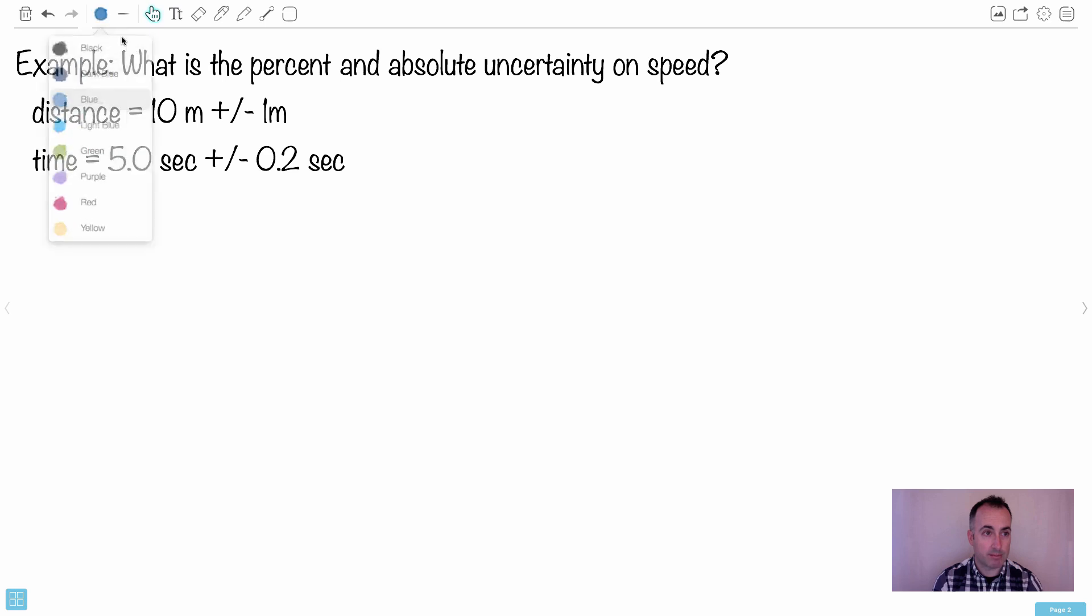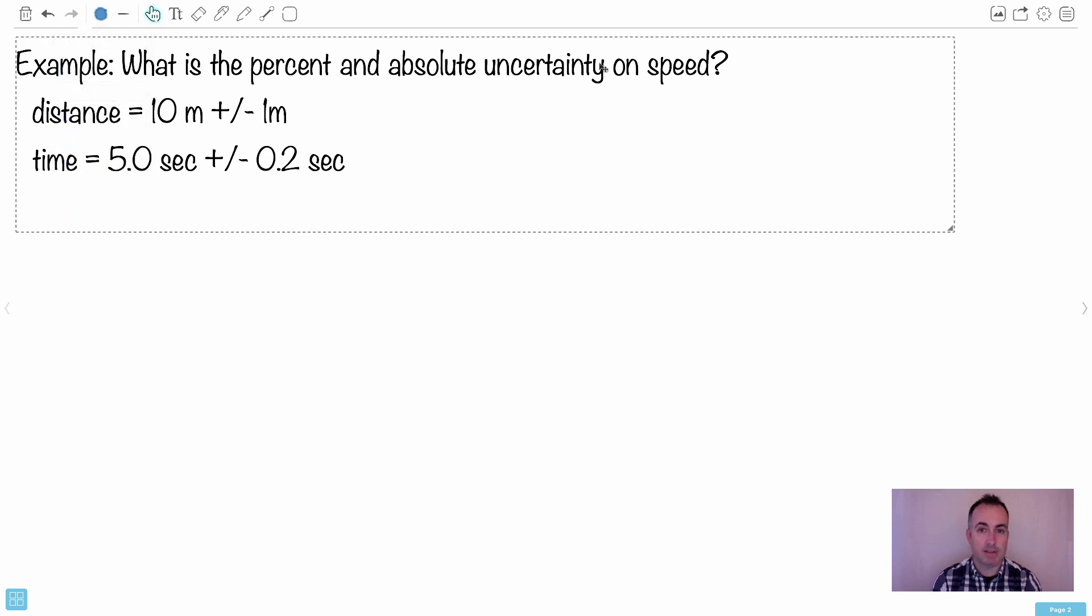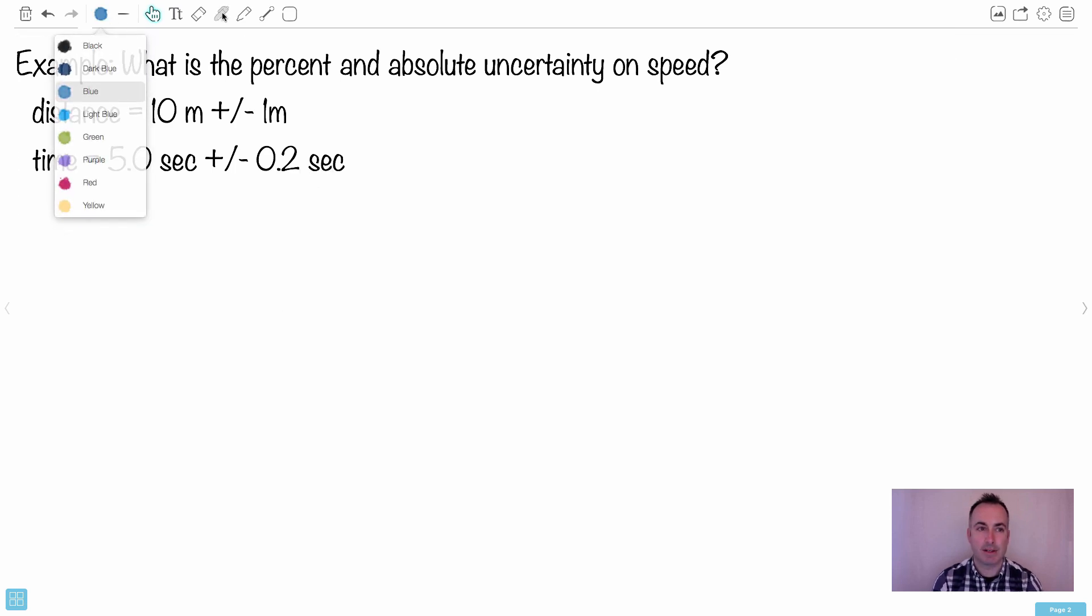So here we go. We have an actual example. What's the percent and absolute uncertainty on the speed? So here we have a distance of 10 meters plus or minus 1 meter, and we have a time of 5.0 seconds plus or minus 0.2 seconds. So to find the percent uncertainty, that might be a good one to start with. So let's do the percent uncertainty.